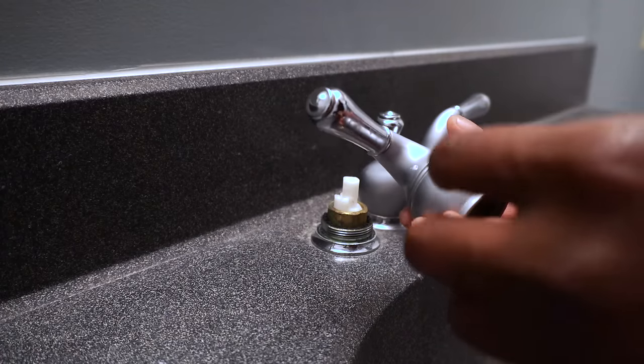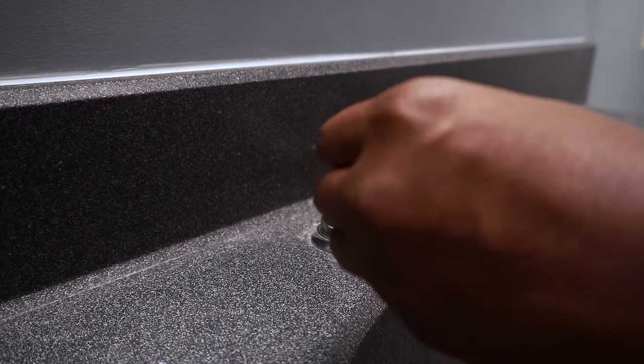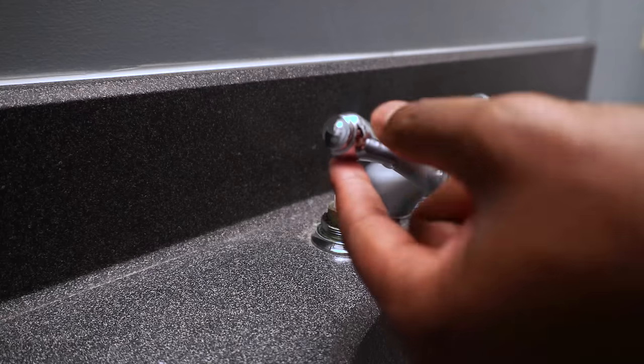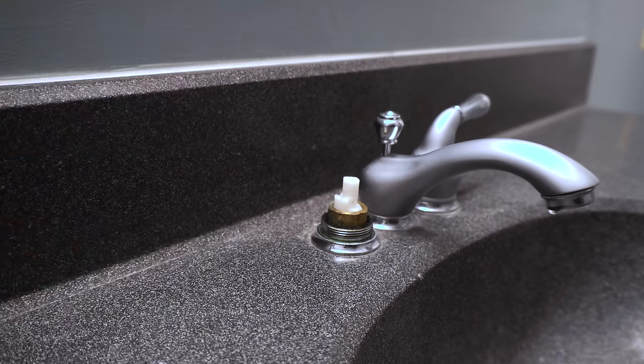Once you have it off you can remove the chrome shiny part that you have there. If for some reason it's easy to take it off. I didn't need to as you saw but it is optional. Quick note, you're going to want to remember the position of the white piece sticking out. Because when you put the new one in you want to keep it the same way.